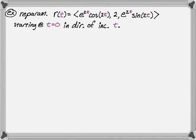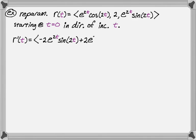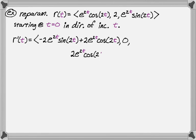First thing we need to do is find r prime, which is not really trivial. So r prime of t: the first component is a product, so I need the product rule. It's going to be first times the derivative of cosine of two t, giving negative two e to the two t sine of two t, plus two e to the two t cosine of two t — that's the product rule. The derivative of the middle component, two, is zero. The third component is basically the same as the first — it's a product, so we apply the product rule again.